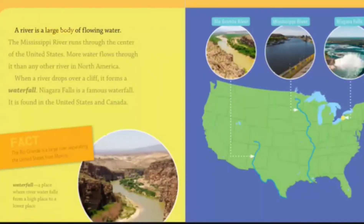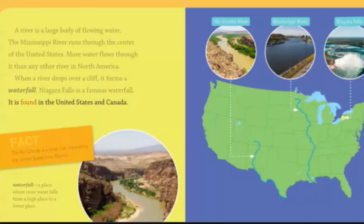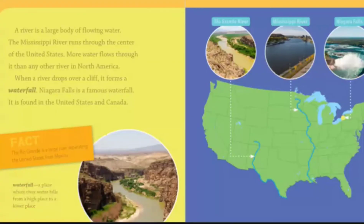A river is a large body of flowing water. The Mississippi River runs through the center of the United States. More water flows through it than any other river in North America. When a river drops over a cliff, it forms a waterfall. Niagara Falls is a famous waterfall found in the United States and Canada. A waterfall is a place where river water falls from a high place to a lower place. The Rio Grande is a large river separating the United States from Mexico.